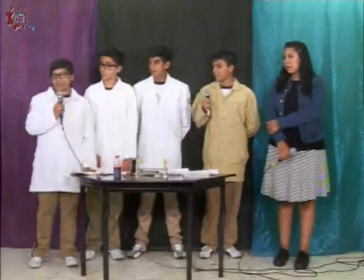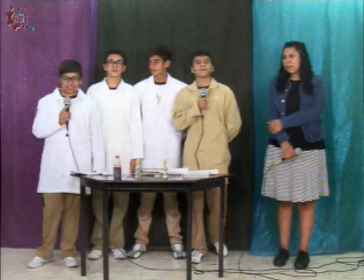El pH es una escala de medida para diferenciar si una sustancia es un ácido o una base. La escala va del 1 al 14: del 1 al 6 son ácidos, el 7 es un punto neutro, y del 8 al 14 se consideran bases. Dependiendo del color que tomen, se sabe si es un ácido o una base. Los ácidos toman colores rojos, rojizos, rosas, naranjas o amarillos. Las bases toman colores verdes, azules o verde más fuerte.